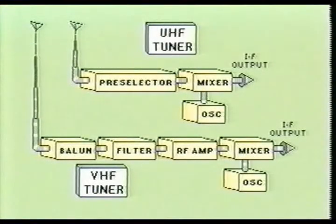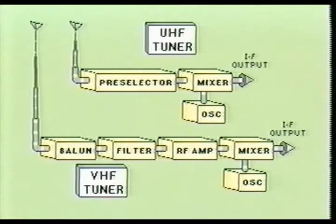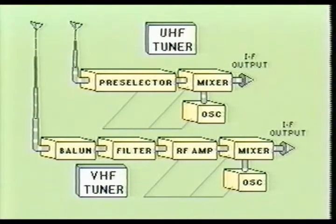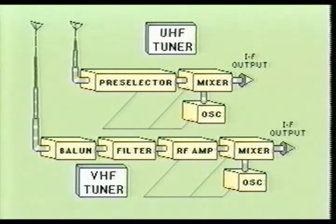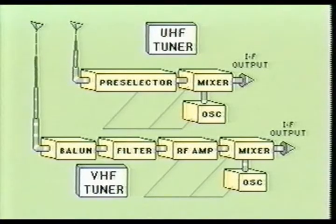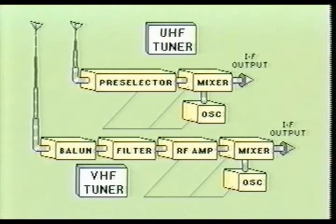Up to this point you have examined the circuits used in the UHF and VHF tuner assemblies. In this portion of the video you will examine how the tuner is able to select one channel from the many channel frequencies being inputted at the antennas. Making the tuner stages selective requires that three sections contained within the tuner assemblies be adjusted simultaneously to the desired frequencies. In the VHF tuner, these three sections are the RF amplifier, mixer, and oscillator sections. In the UHF tuner these three sections are the preselector, mixer, and oscillator sections. Channel selection may be accomplished through the use of mechanical means or through the use of solid state devices.